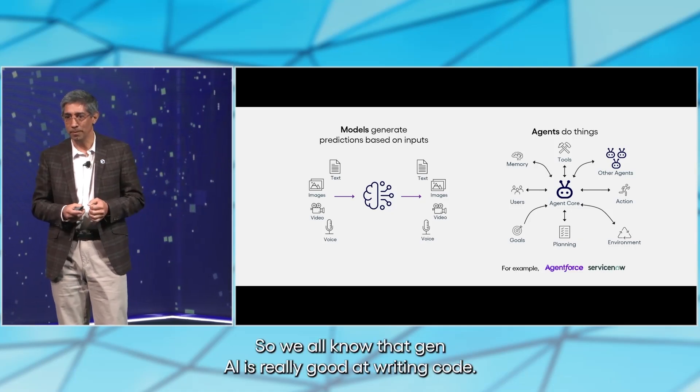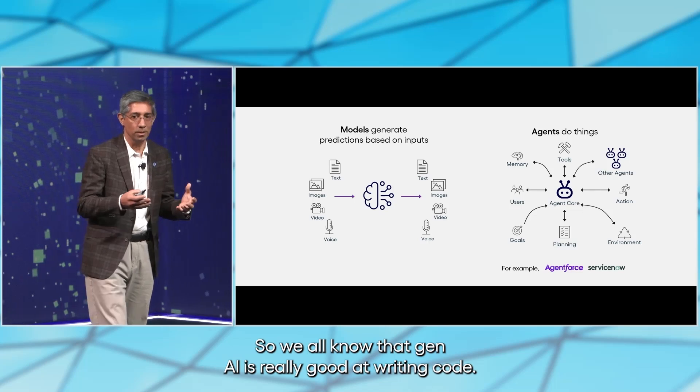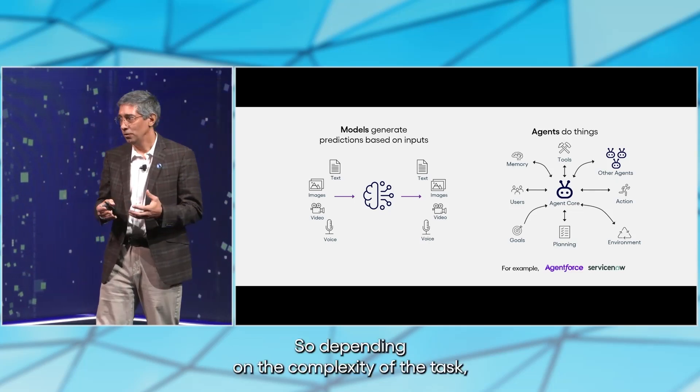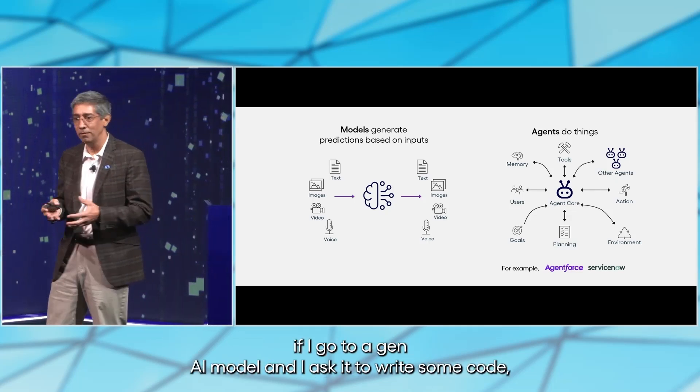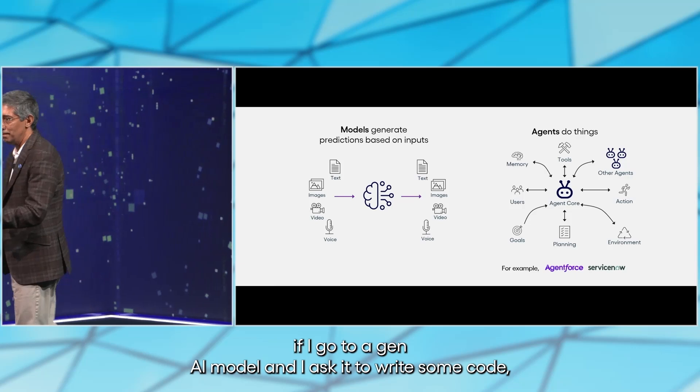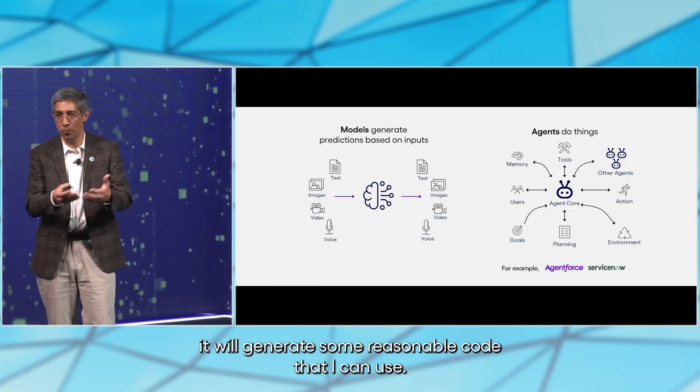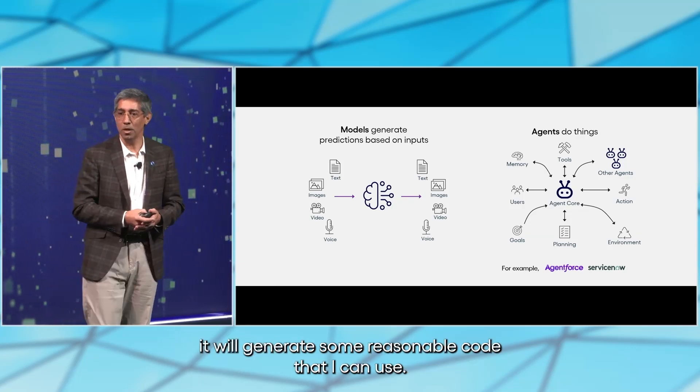Let me give you an example. We all know that Gen.AI is really good at writing code. Depending on the complexity of the task, if I ask it to write some code, it will generate some reasonable code that I can use.